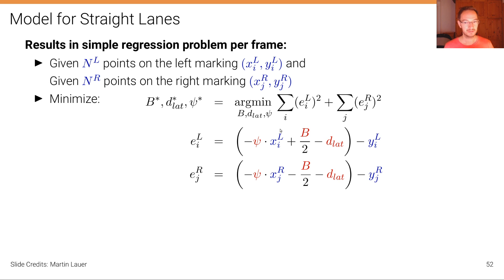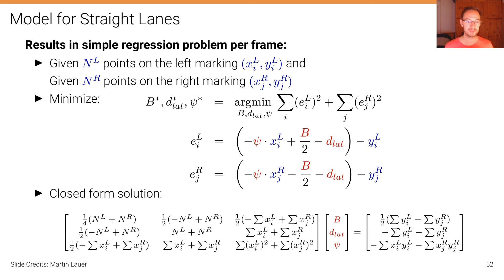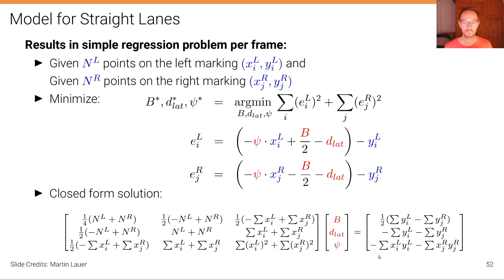As you can see, the parameters psi, b, and D_lat all appear linearly inside the squared error term, which means we have a closed-form solution to this linear least squares problem. The solution gives us b, D_lat, and psi by solving a simple linear system. It is a standard least squares system.